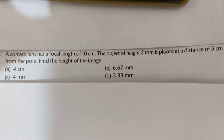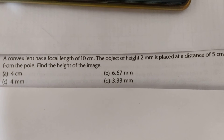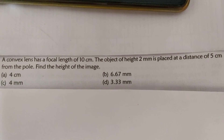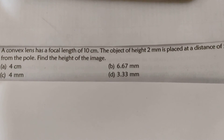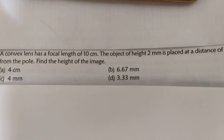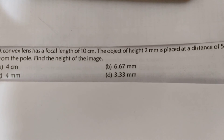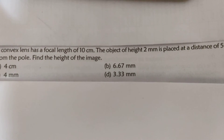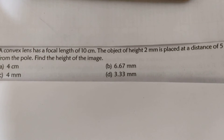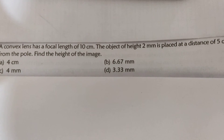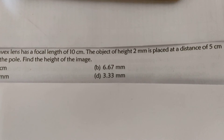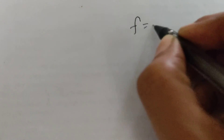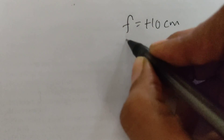The next MCQ: a convex lens has a focal length of 10 cm. An object of height 2 mm is placed at a distance of 5 cm from the pole. Find the height of the image — four measurements are given, select the correct one. The focal length of the convex lens is +10 cm, height of object h is 2 mm, and object distance u is −5 cm.